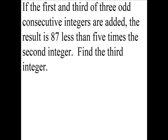If the first and the third of three odd consecutive integers are added, the result is 87 less than five times the second integer. Find the third integer.